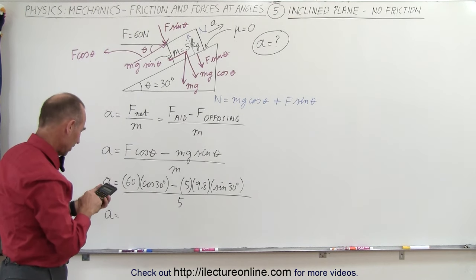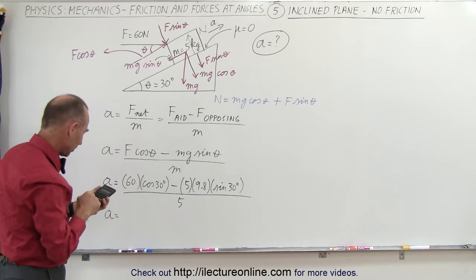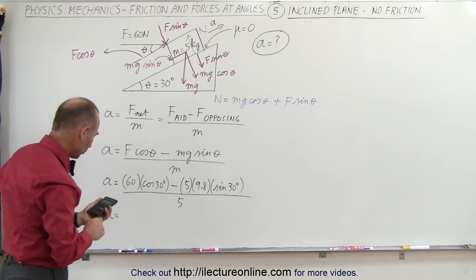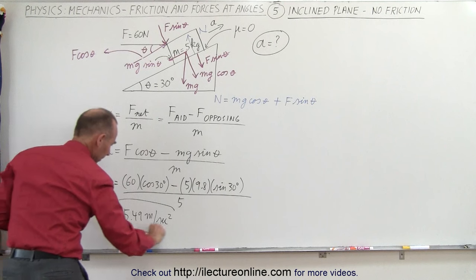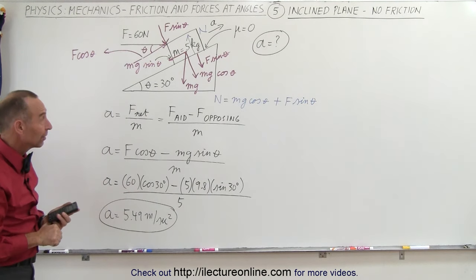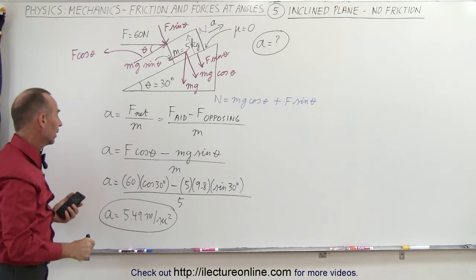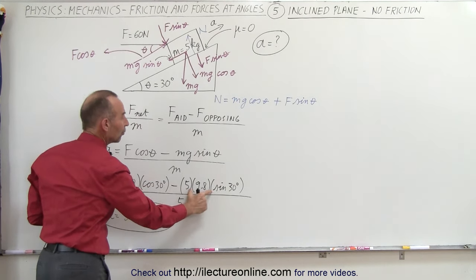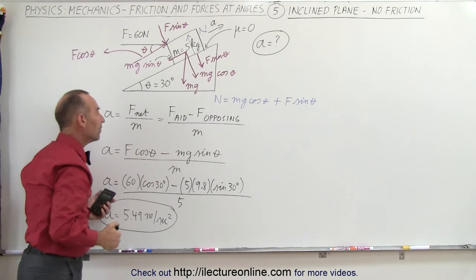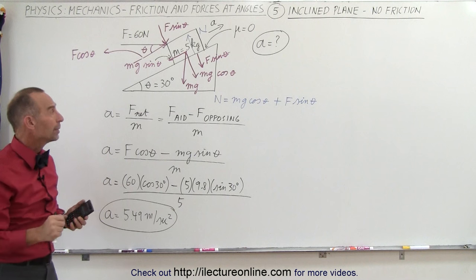So the acceleration equals 60 newtons times the cosine of 30 degrees, minus the mass of 5 kg times 9.8 times the sine of 30 degrees, all divided by 5. We have cosine 30 times 60, subtract 5 times 9.8 times 0.5, divided by 5, which equals 5.49 meters per second squared. That is the acceleration of the block up the incline, since the applied force component is larger than the weight component pulling it down.